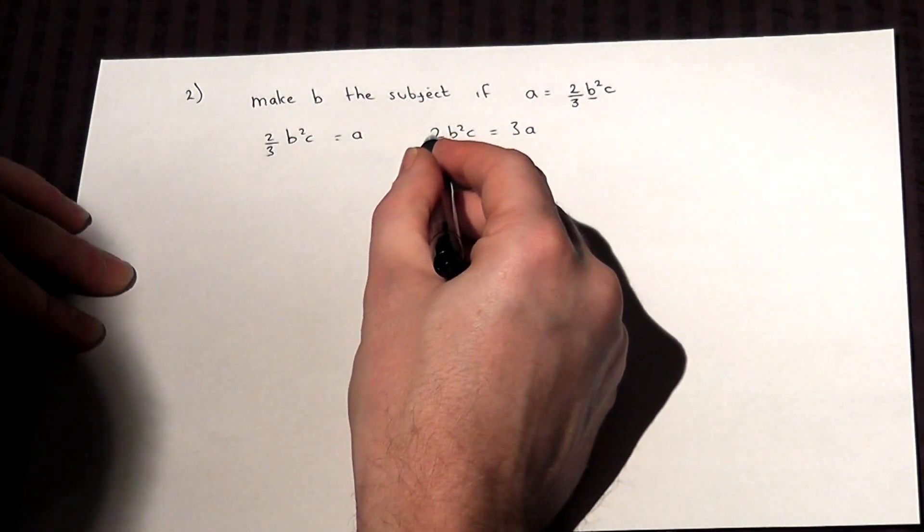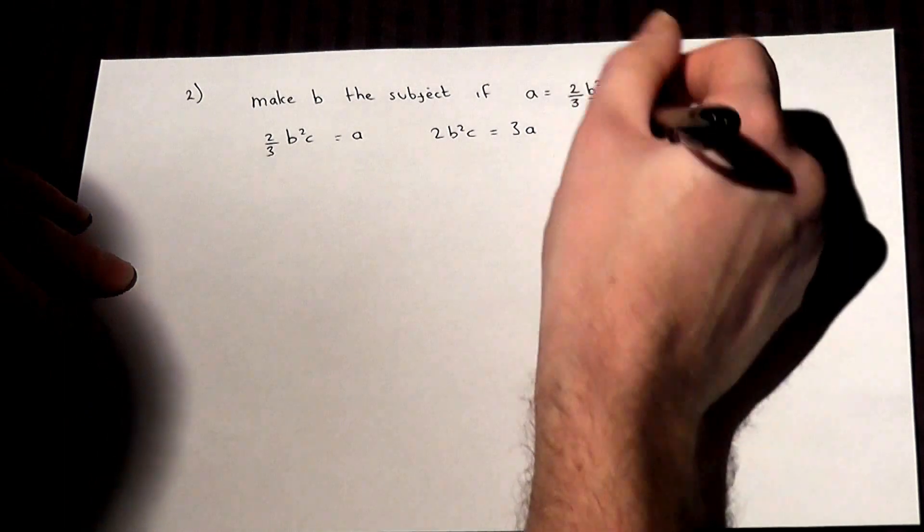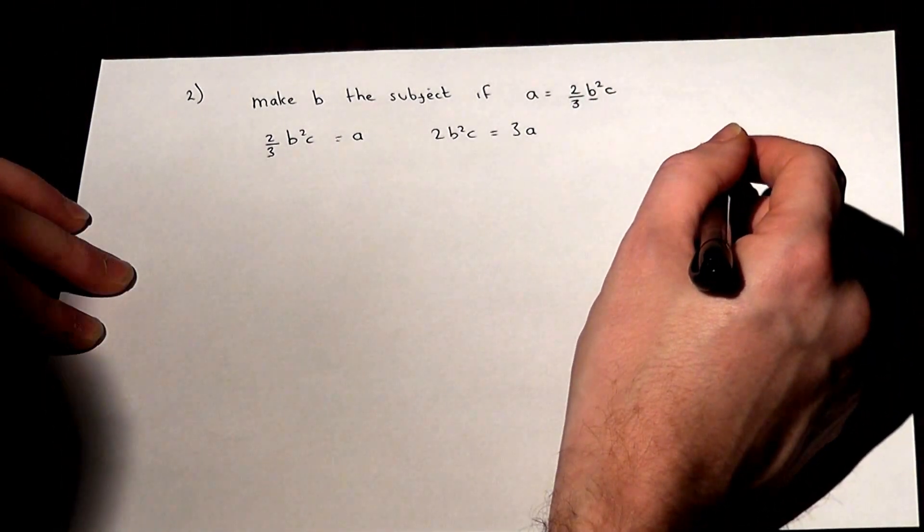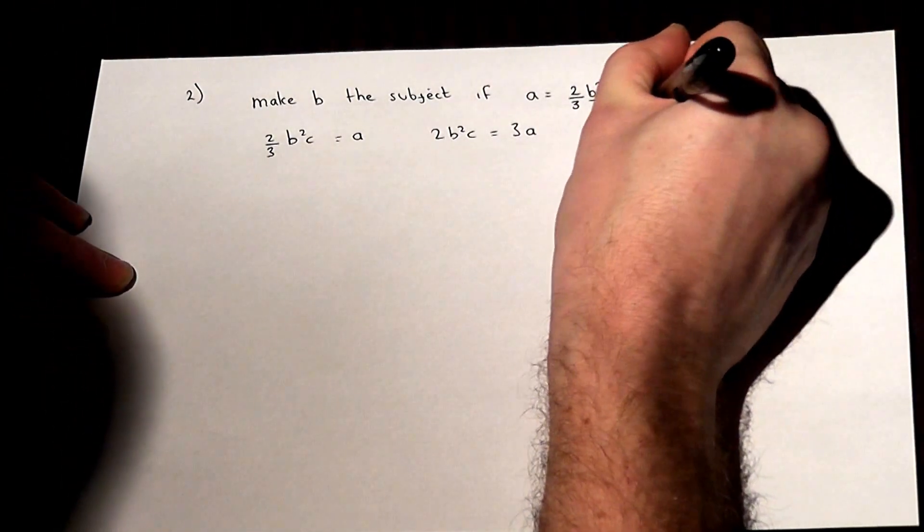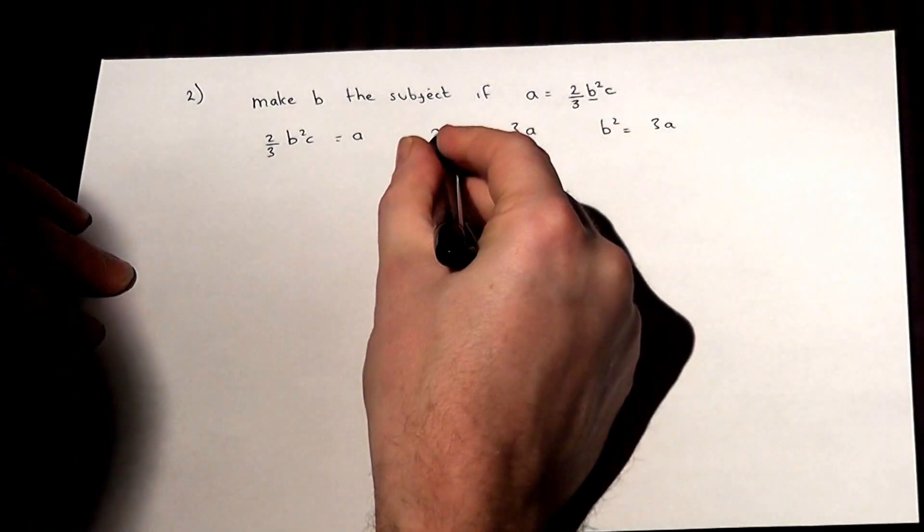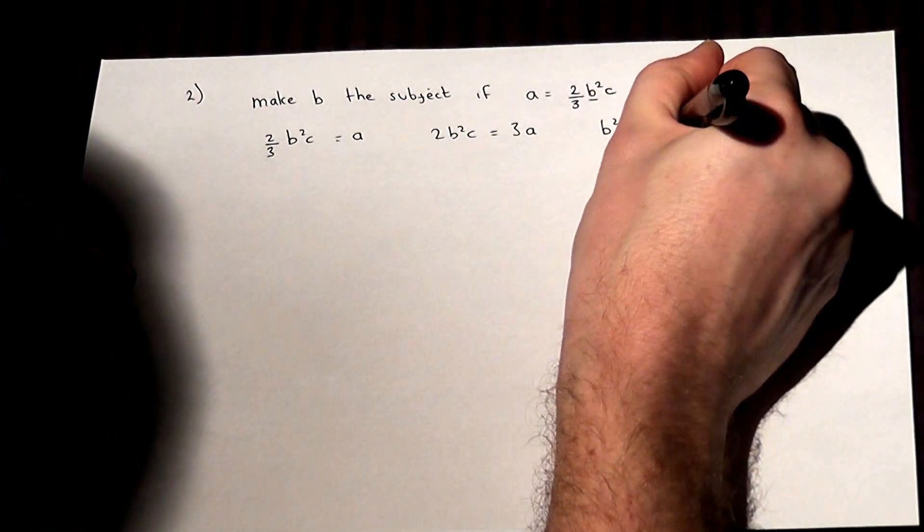If I then divide by the 2 and the C, then we'll cancel off from that left hand side. So B squared will equal 3A. Again, divide by the 2 and the C, divide by 2C.